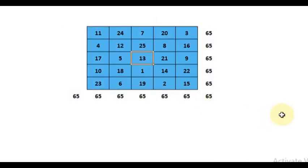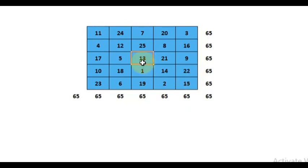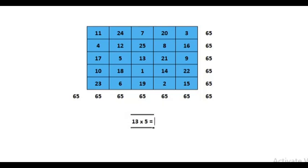Now, in an odd order magic square, the center number is the most important. The center number is here — 13. And the order is 5x5, so 5 is the order. Center number into the order gives you the magic sum — that is 13 into 5 gives you 65.